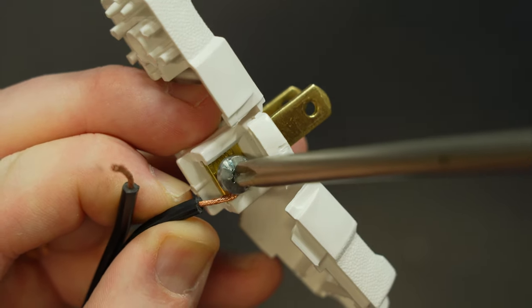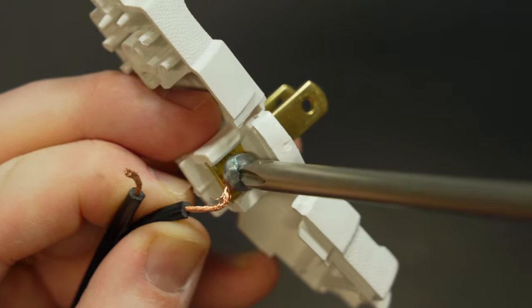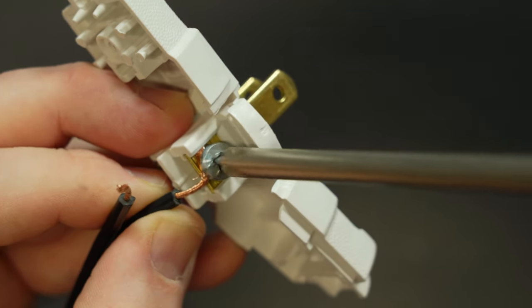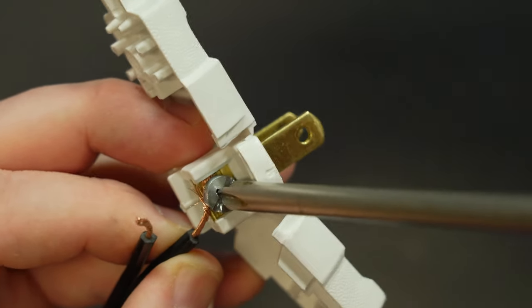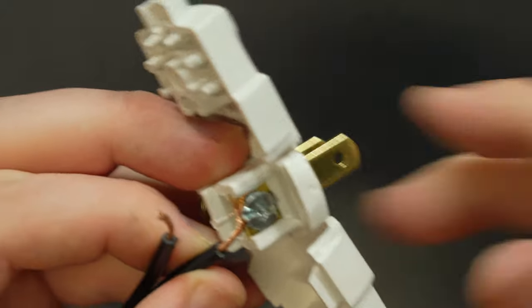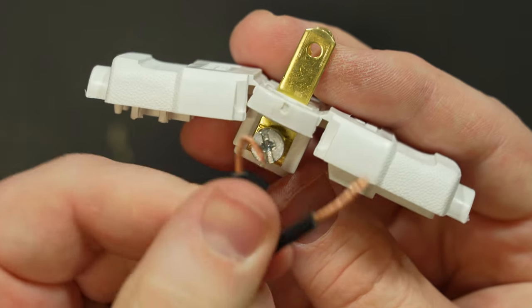As you can see this makes a pretty poor connection and a dangerous one at that as there is a lot of extra copper conductor that's pushed out of the connection joint where it may possibly touch the other conductor and cause a short circuit. So now let me demonstrate the right way to do this.